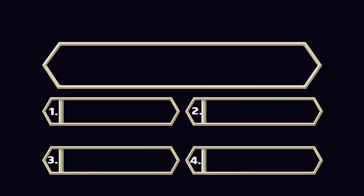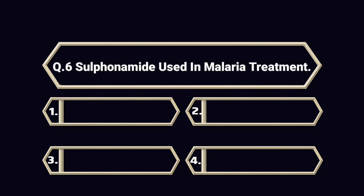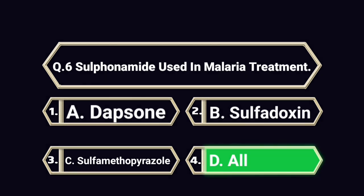Question number 6. Sulfonamide used in malaria treatment. A. Dapsone. B. Sulfadoxine. C. Sulfamethoxazole. D. All. Answer is D. All.